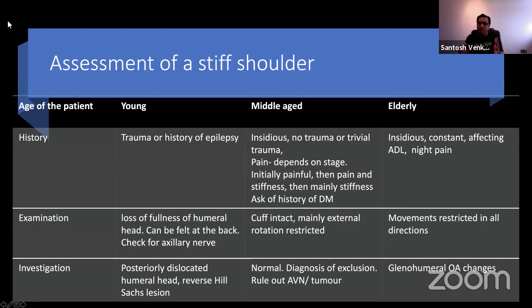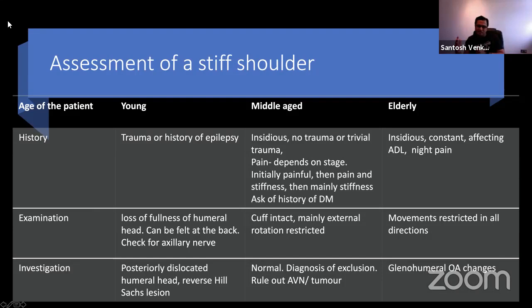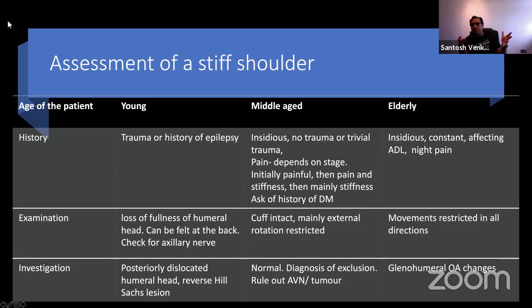The purpose of this talk is to see how we can approach a patient with a stiff shoulder and establish the likely pathology and management. In general, the age of the patient will lead you to where the primary pathology is likely to be. A young patient may have a history of trauma. A middle-aged patient typically has no trauma, gradual onset, worsening pain, difficulty with activities of daily living, and possibly a history of diabetes. An elderly patient in their late 60s or above typically has gradual onset, constant aching pain that keeps them awake, and creaking sounds in the shoulder.